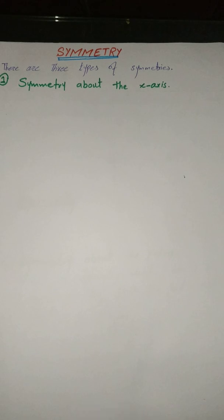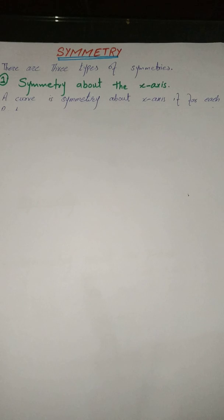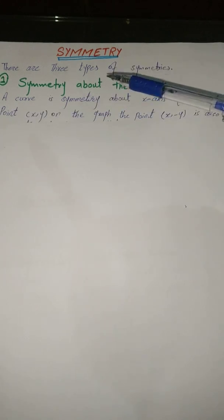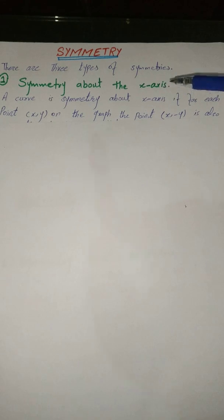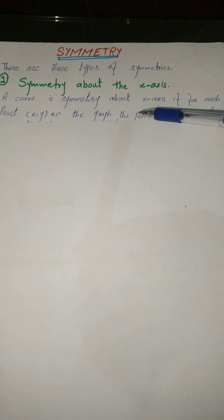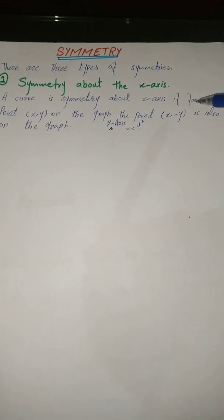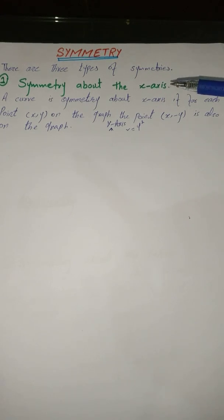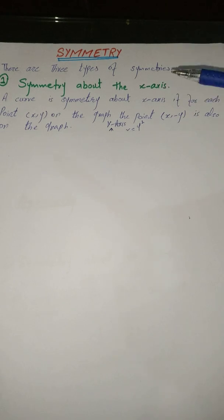Symmetry about the x-axis means the graph of a curve looks the same above the x-axis and below the x-axis. A curve is symmetric about the x-axis if, for each point (x, y) on the graph, the point (x, −y) is also on the graph.